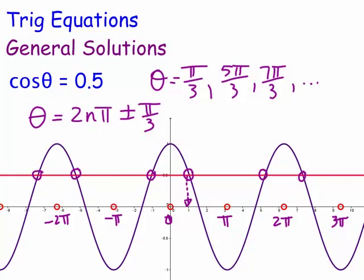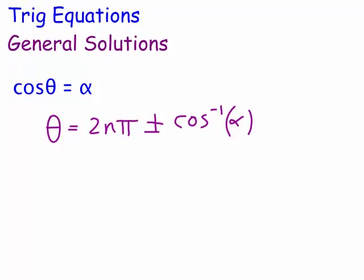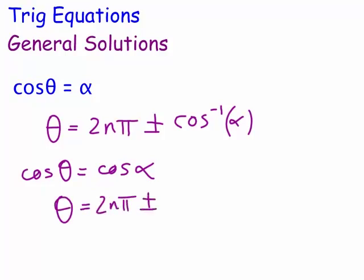More generally, for cos θ = α, the general solution is θ = 2nπ ± cos⁻¹(α). Sometimes this is written as: given cos θ = cos α, then θ = 2nπ ± α.